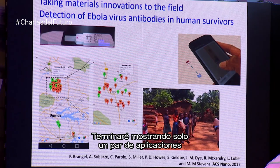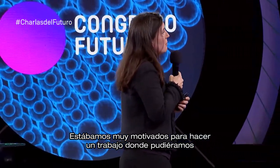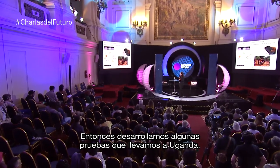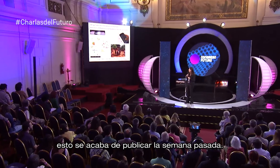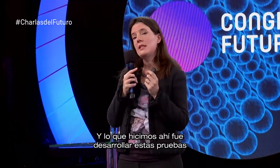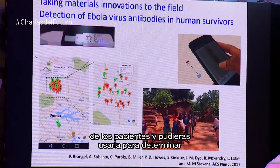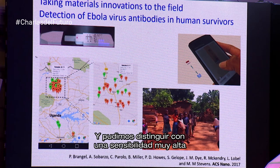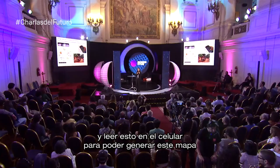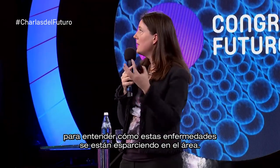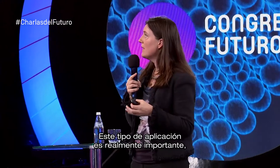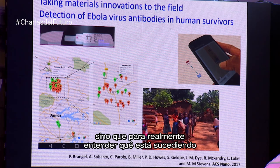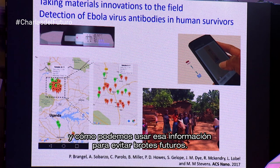I'm going to finish by showing you just a couple of applications of where we've shown this in the field. We were very motivated to do some work to help with understanding how Ebola was spreading, and so we developed some tests that we took to Uganda — a very collaborative project that has just come out in publication. What we did was develop these tests so that you could take a very small sample of blood from patients and use it to determine what strain of Ebola these patients had had. We were able to distinguish with very high sensitivity between three different strains of the virus and read this on a mobile phone, so you could generate a map to understand how these diseases are spreading within the field.